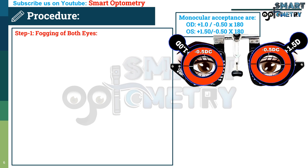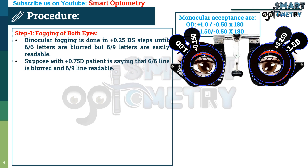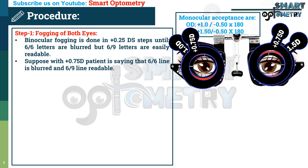Step 1: Fogging of both eyes. Binocular fogging is done in 0.25 diopter spherical steps until the 6/6 letters are blurred but the 6/9 letters are easily readable. Suppose with plus 0.75 diopter, the patient says that the 6/6 line is blurred and the 6/9 line is readable.